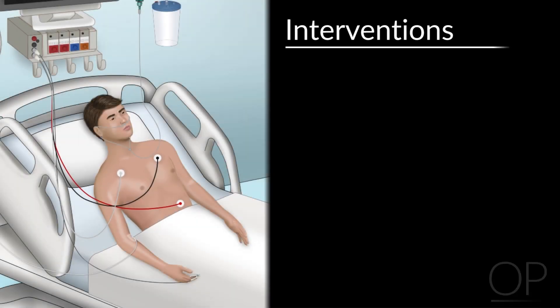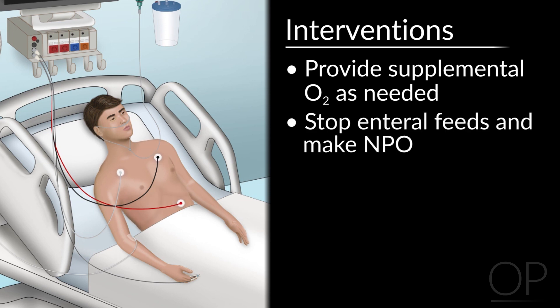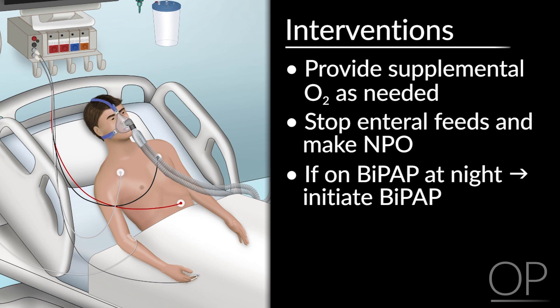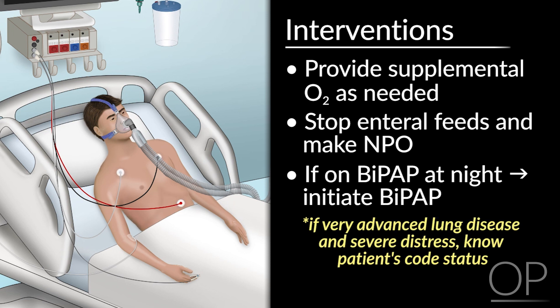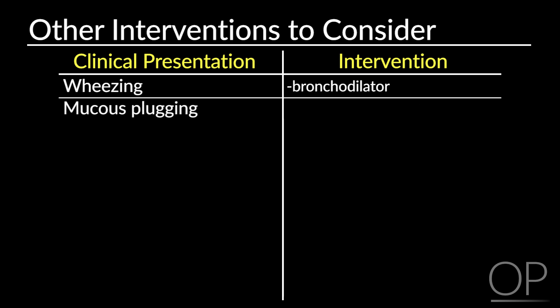Initial interventions to initiate: start by providing supplemental oxygen as needed. However, in patients that chronically retain carbon dioxide, be careful about giving too much oxygen as this could suppress the patient's drive to breathe. Stop all enteral feeds and make the patient NPO. If the patient is normally on BiPAP at night, initiate this to help with gas exchange and with the work of breathing. If the patient has very advanced lung disease and is in severe distress, make sure you know the patient's code status so as to guide further management. Depending on the patient's particular presentation, there are numerous additional interventions. For example, if the patient is wheezing, you can trial a bronchodilator. If you are concerned about mucus plugging, have the nurse do chest physical therapy and airway clearance, assuming the patient is stable for this.